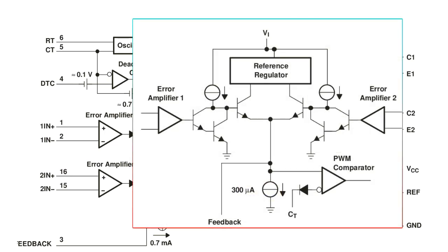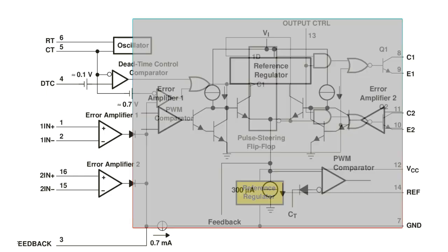Note: the reference is internally programmed to an initial accuracy of plus or minus 5% and maintains stability over an input voltage range of 7V to 40V. For input voltage less than 7V, the regulator saturates within 1V of the input and tracks it.